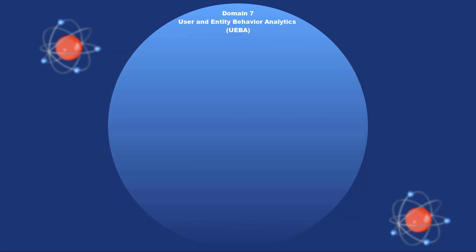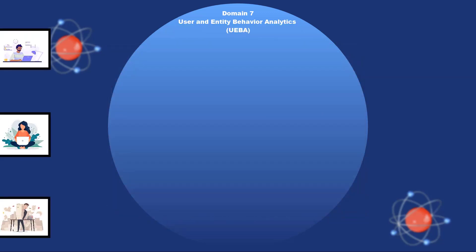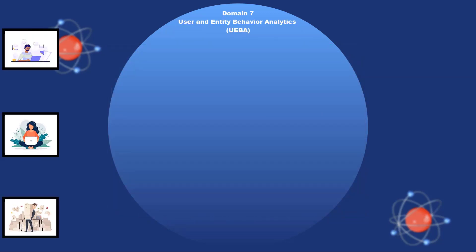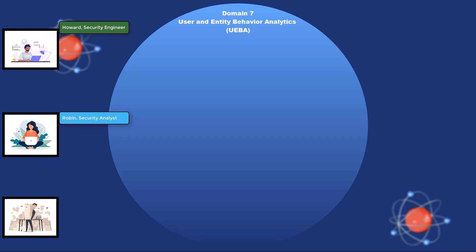Let's say we have three people at Rymar Tech: Howard, the security engineer; Robin, the security analyst; and Gary, the accountant.